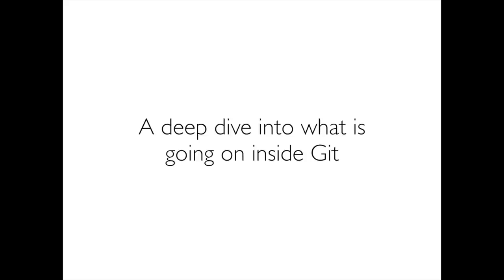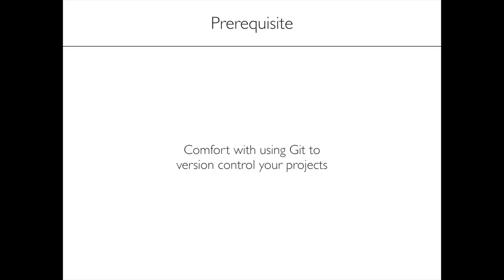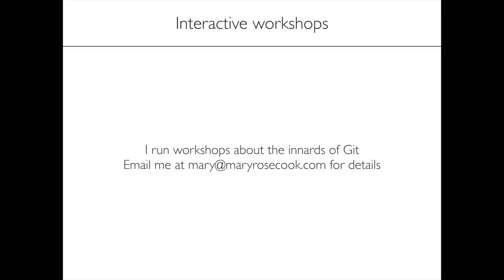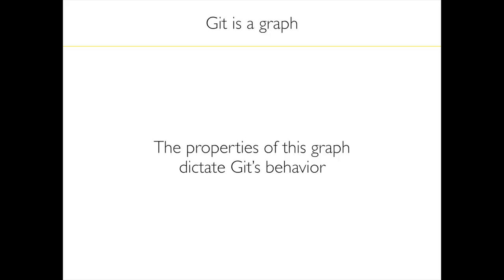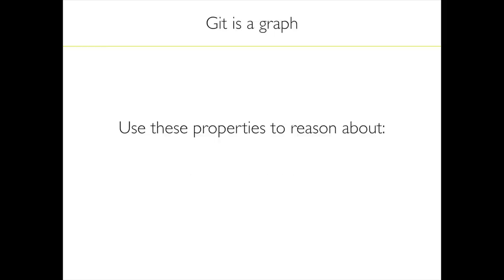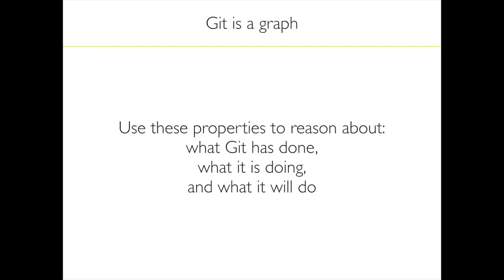Hi, my name's Mary, and I'm going to talk about Git from the inside out. This talk will be a deep dive into what's going on inside Git. The main prerequisite is to be comfortable using Git to version control your own projects. The approach of this talk is that Git is a graph, and it's the properties of this graph that dictate Git's behaviour. You can use these properties to reason about what Git has done, what it is doing, and what it will do.